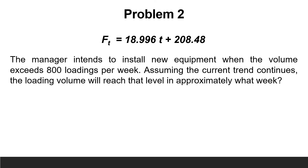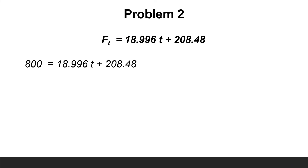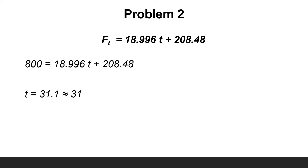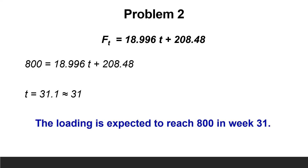The third question: the manager intends to install new equipment when the volume exceeds 800 loadings per week. Assuming the current trend continues, in approximately what week will loading volume reach that level? Here we have f(t) and need to find t. Using the same equation, substitute f(t) = 800: 800 = 18.996 × t + 208.48. Solving for t results in t = 31.1, approximately 31. The loading is expected to reach 800 in week 31.